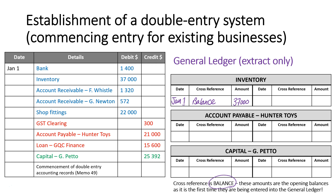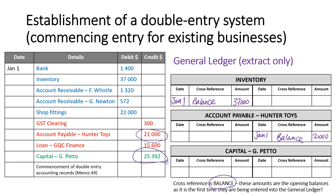So inventory would have a debit balance. Accounts payable for Hunter Toys would have a credit balance of $21,000, once again using the term "balance." And the capital figure on January 1st would also use the cross-reference "balance" — $25,392. For commencing entries, they don't have a cross-reference to another account; they just use "opening balance" or "balance" as their cross-reference.